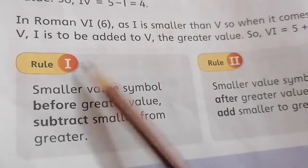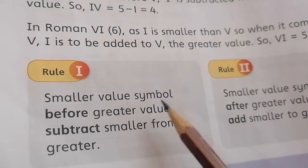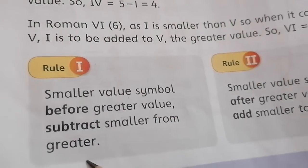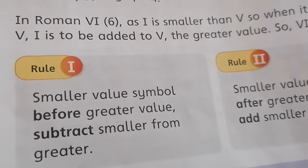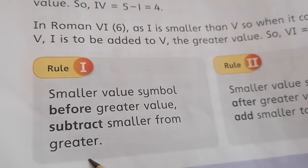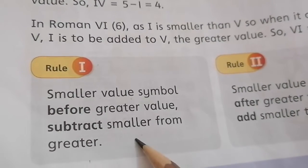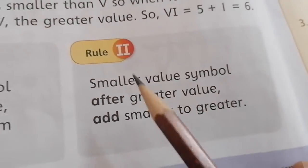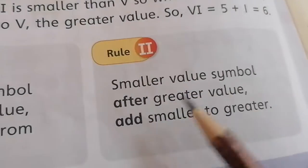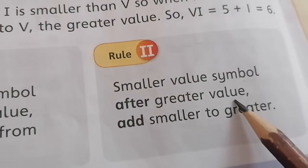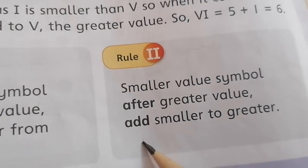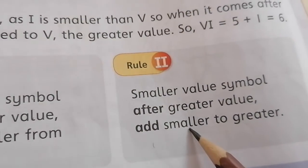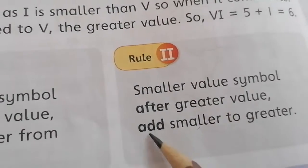Rule number one: smaller value symbol before greater value — subtract smaller from greater. Always remember what we have to do: subtract a smaller value from a greater number. Rule number two: smaller value symbol after greater value symbol — we will have to add. We can't subtract greater value from smaller; there we will do addition.